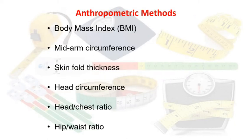In anthropometric methods, we can measure body mass index (BMI), mid-arm circumference, skinfold thickness, head circumference, head-to-chest ratio, and hip-to-waist ratio. Among these, BMI is the most commonly used method for adults, while for children we commonly measure mid-arm circumference and head circumference. Instruments such as measuring strips and weight machines are available for measuring these.